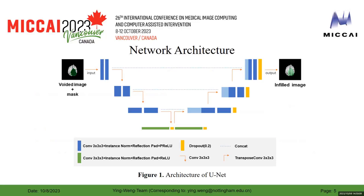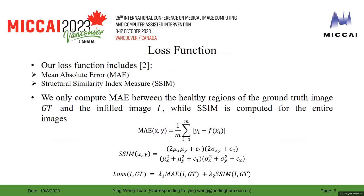Figure 1 illustrates our architecture of U-Net. Our loss function includes two parts: one is MAE and the other is SSIM. We only compute MAE between the healthy regions of the ground truth image GT and the inpainted image I, while SSIM is computed for the entire images.